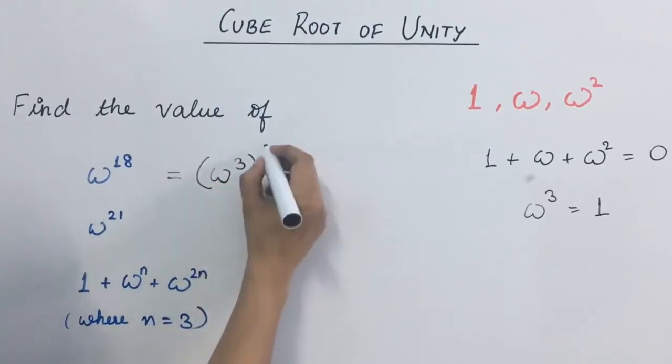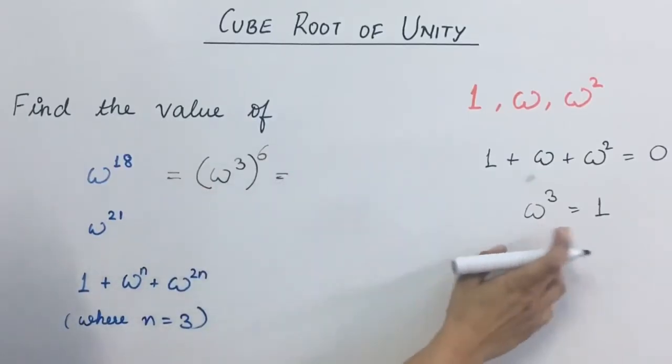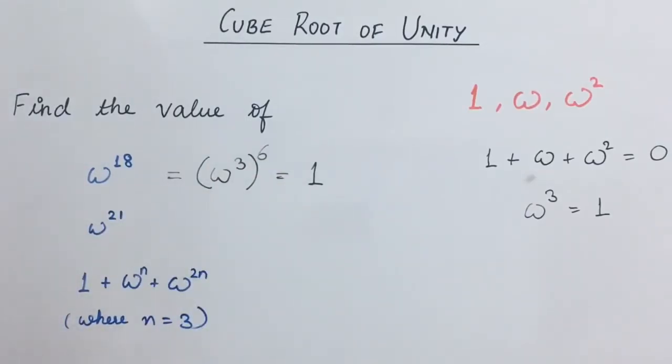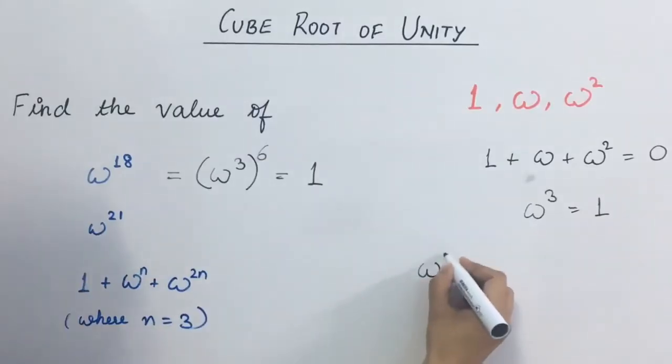By the laws of exponent, we can write it as this. Ab omega cube ki value kya hoti hai? 1. So this will come out to be 1 raised to power 6, that is 1 itself. So in general, we can say that if omega is raised to the power 3 into n, toh yeh value hamisha kya hogi? 1 hogi.